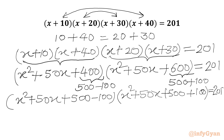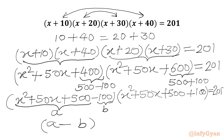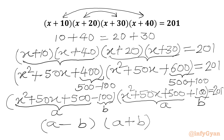Now if I consider x squared plus 50x plus 500 equal to a, and 100 equal to b, then the first bracket is a minus b and the second bracket is a plus b. So I can write a minus b times a plus b, which by the algebraic identity gives a squared minus b squared.